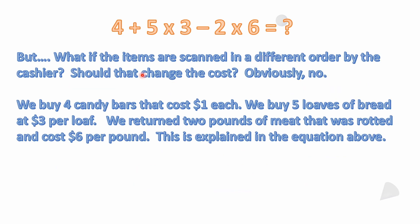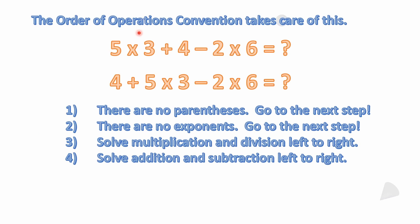If the cashier scans items in a different order, should the cost change? Obviously not — same quantities, same prices. So let's say the cashier scans four candy bars first (plus four), then five loaves of bread (five times three), then the returned meat (minus two times six). The order of operations convention takes care of this: both equations should give the same answer.